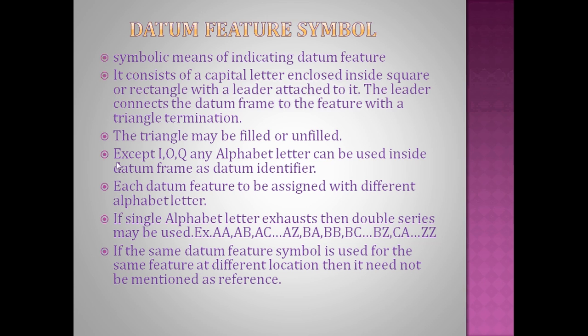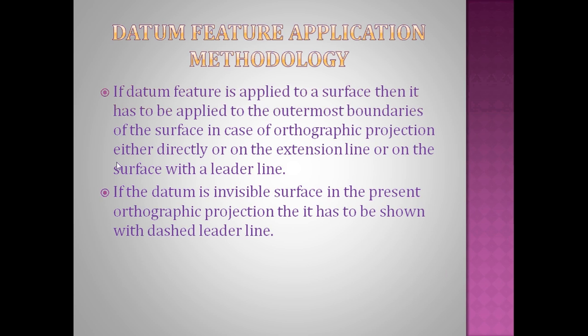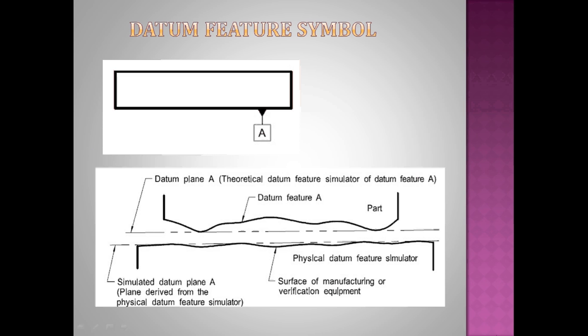Basically it consists of a letter which is placed inside the square box or rectangular box, and they're going to attach a leader to this. Let us see how exactly they're going to attach a letter. Here you can observe there's a letter here. This letter points to this datum feature. Inside the box we have placed it A - that is datum feature A.